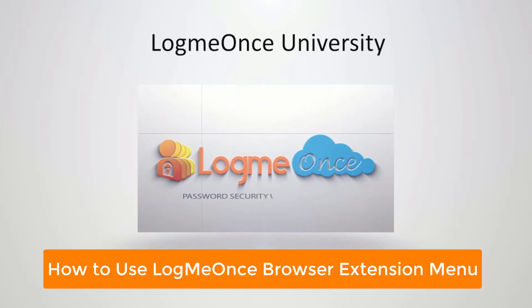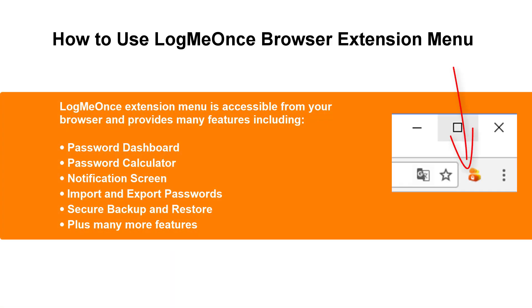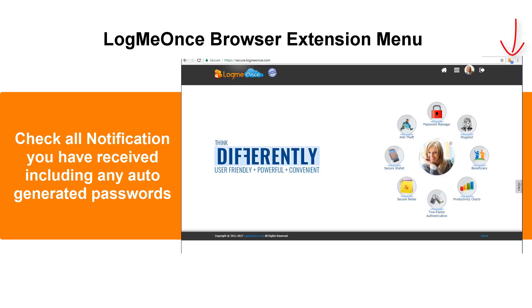How to use the LogMeOnce Browser Extension Menu. The LogMeOnce Extension Menu is accessible from your browser and provides many features, including Password Dashboard, Password Calculator, Notification Screen, Import and Export Passwords, Secure Backup and Restore, plus many more features. Check all notifications you've received, including any auto-generated passwords.